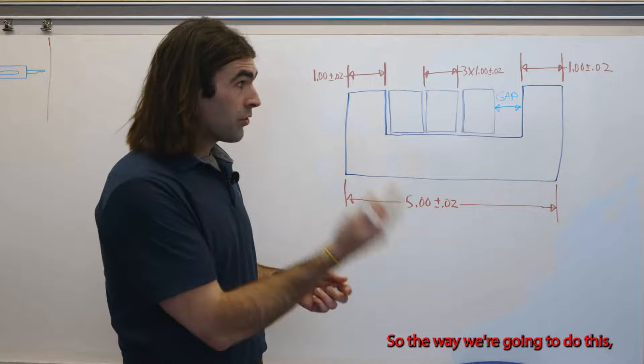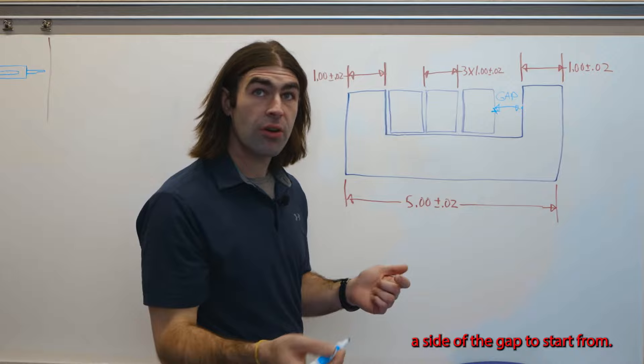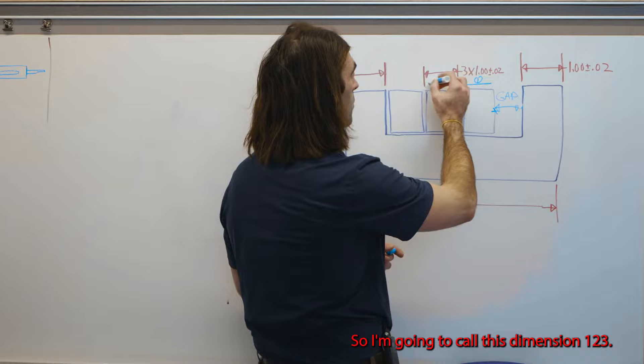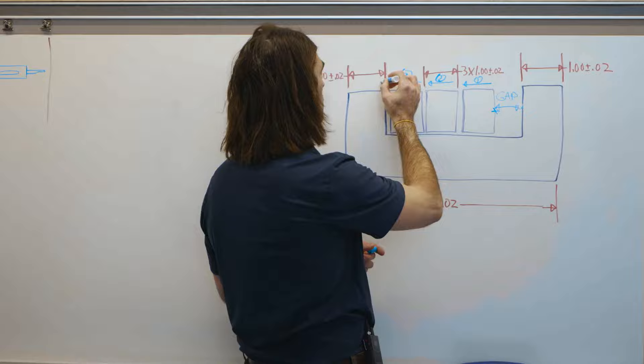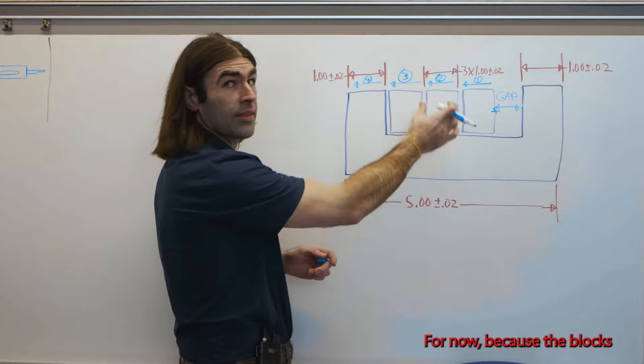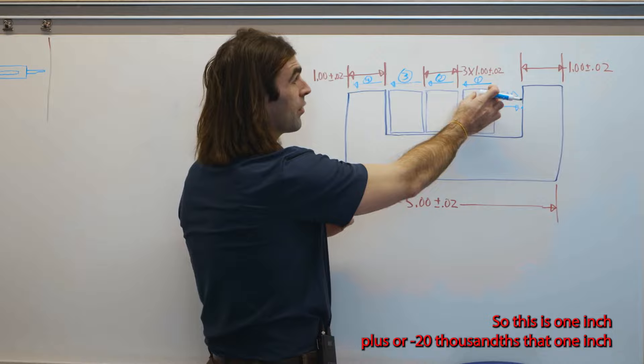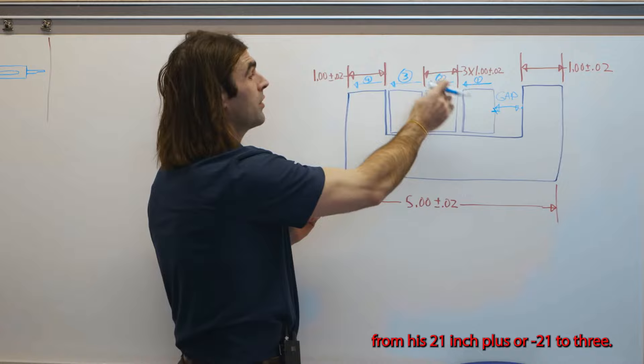So the way we're going to do this, we're going to pick a side of the gap to start from, and then we're going to follow each dimension. So I'm going to call this dimension one, two, three, four. Now, because the blocks are going to fit together at assembly, we assume they're touching. So this is one inch plus or minus 20 thousandths, this one inch plus or minus 20, one inch plus or minus 20, one, two, three.